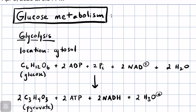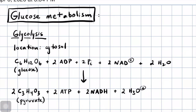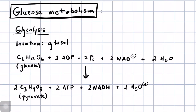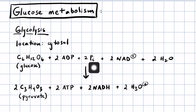We're going to begin by looking at an overview of glucose metabolism, starting with glycolysis, which takes place in the cytosol. The overall change that happens in glycolysis is to take glucose and break it into two identical molecules called pyruvate, and in the process we're going to convert ADP and inorganic phosphate into two molecules of ATP.